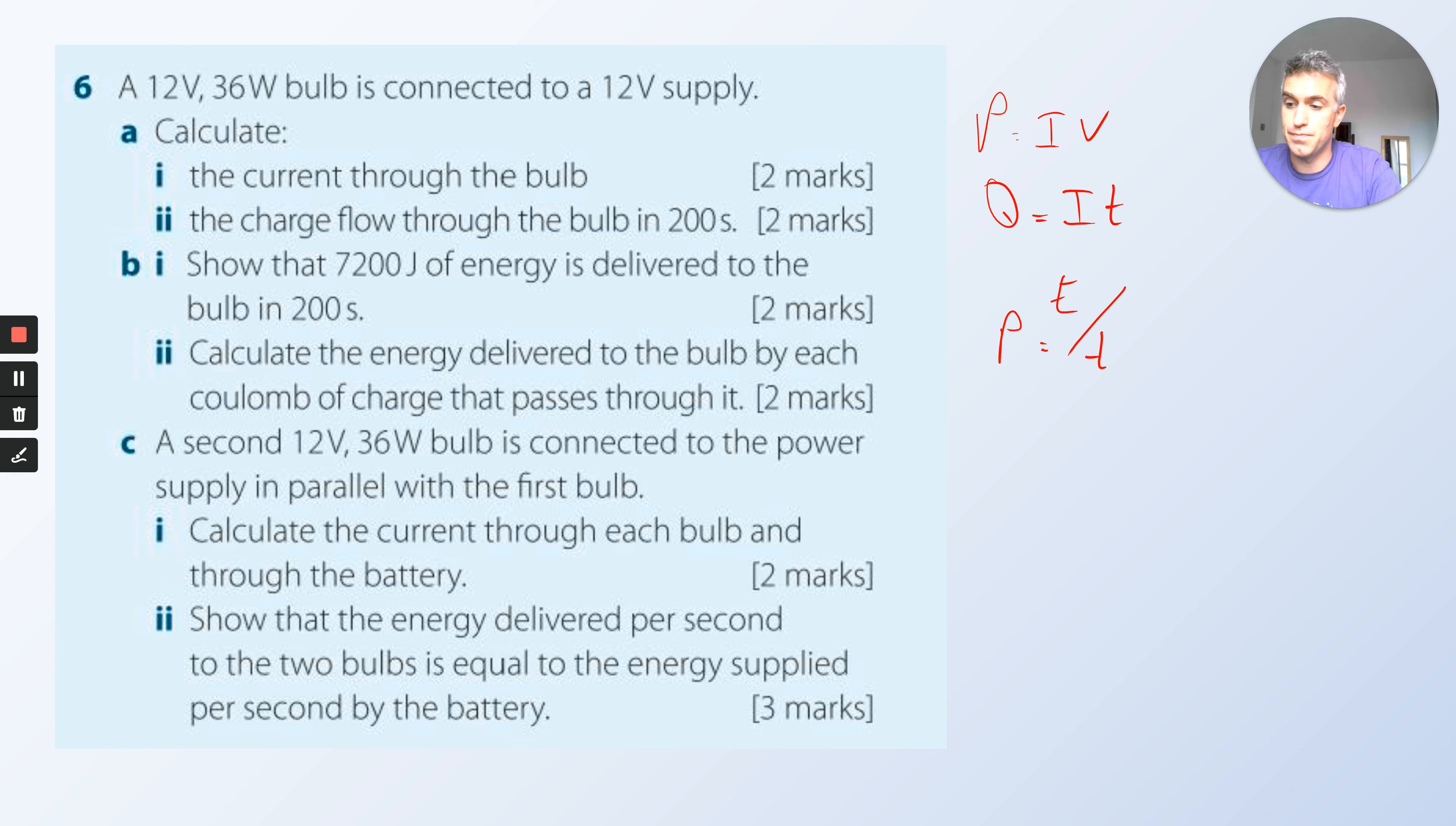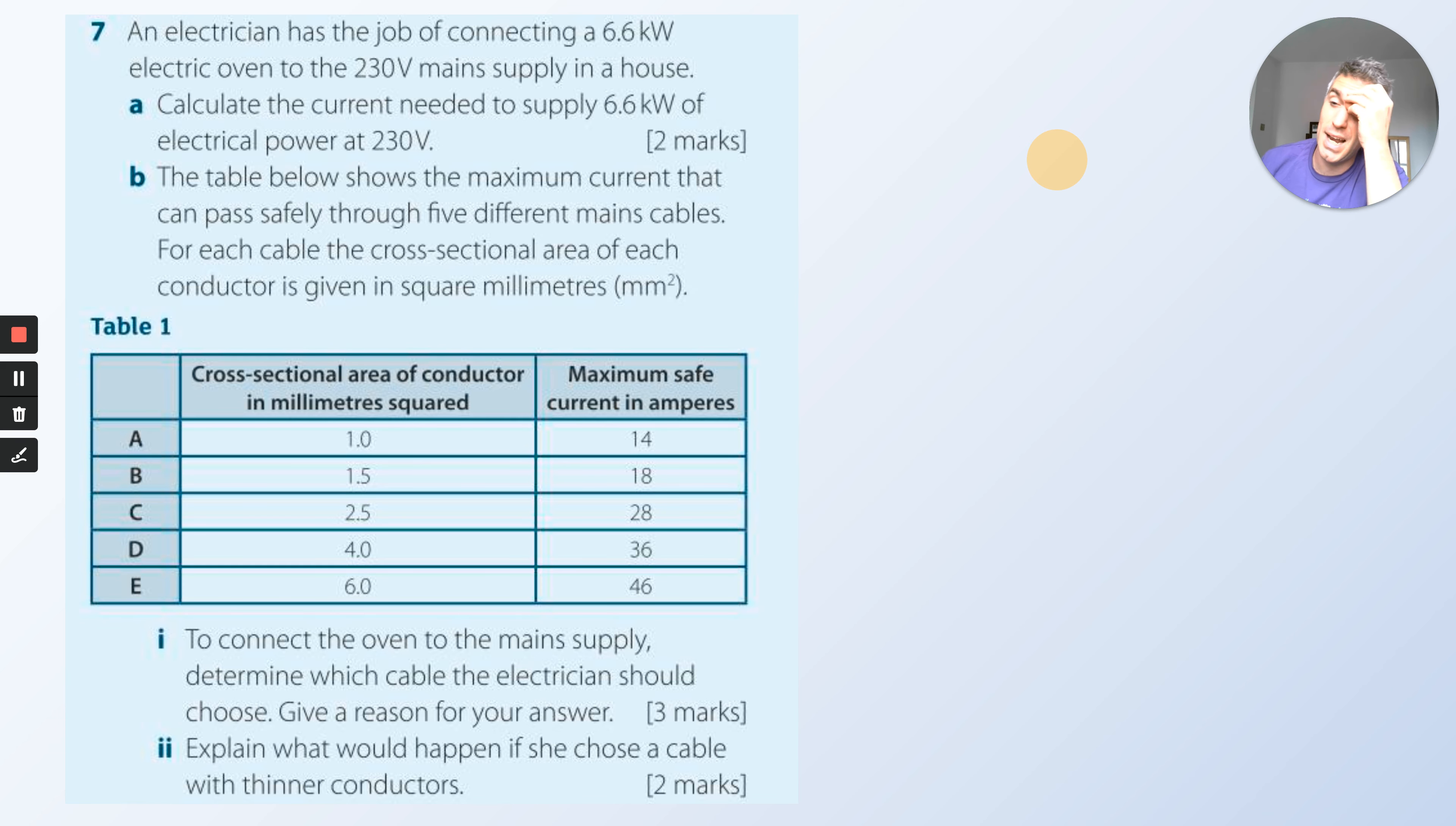A second 12 volt, 36 watt bulb is connected to the power supply in parallel. Calculate the current through each bulb and then through the battery. Show that the energy delivered per second to the two bulbs is equal to the energy supplied per second by the battery. The first part, if you work out the current through one bulb, I suggest for this one, draw the circuit. Then remember the rules for current in parallel and resistance in parallel and potential difference in parallel. Draw the circuit, and then it's much easier to work out. Once you've worked out the current in each bulb, then it's really easy to work out what happens to the battery.